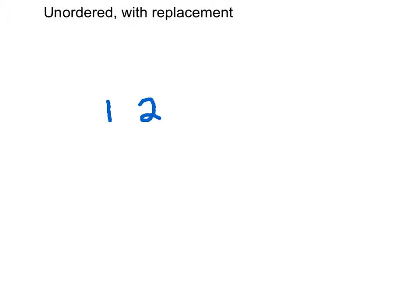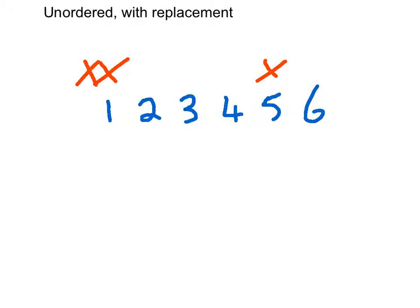The final situation we have to consider is where we don't care about the ordering but we are sampling with replacement. This is akin to rolling a die, where we get the same number of possibilities each time. There are six outcomes possible for each die, and we can get any of these possibilities in any order — for example, a one followed by a five, or even a one again.